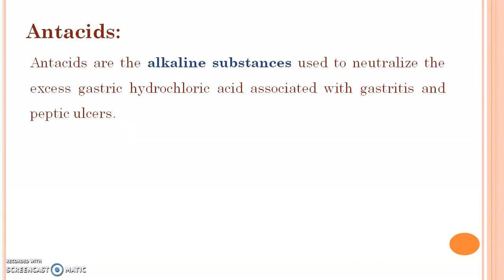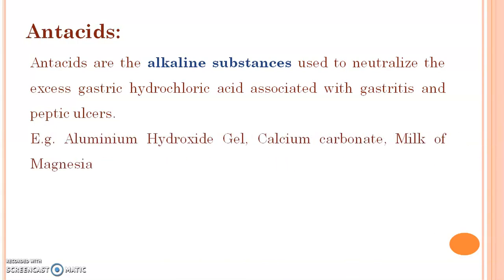Antacids are the alkaline substances used to neutralize the excess gastric hydrochloric acid associated with gastritis and peptic ulcers. Examples are Aluminium Hydroxide Gel, Calcium Carbonate, and Milk of Magnesia.